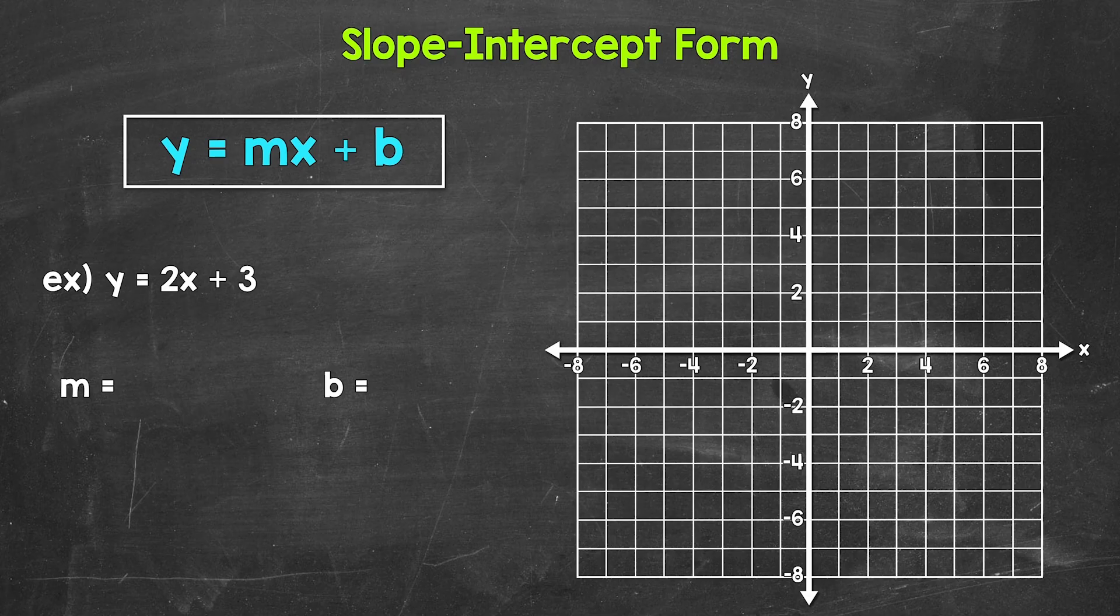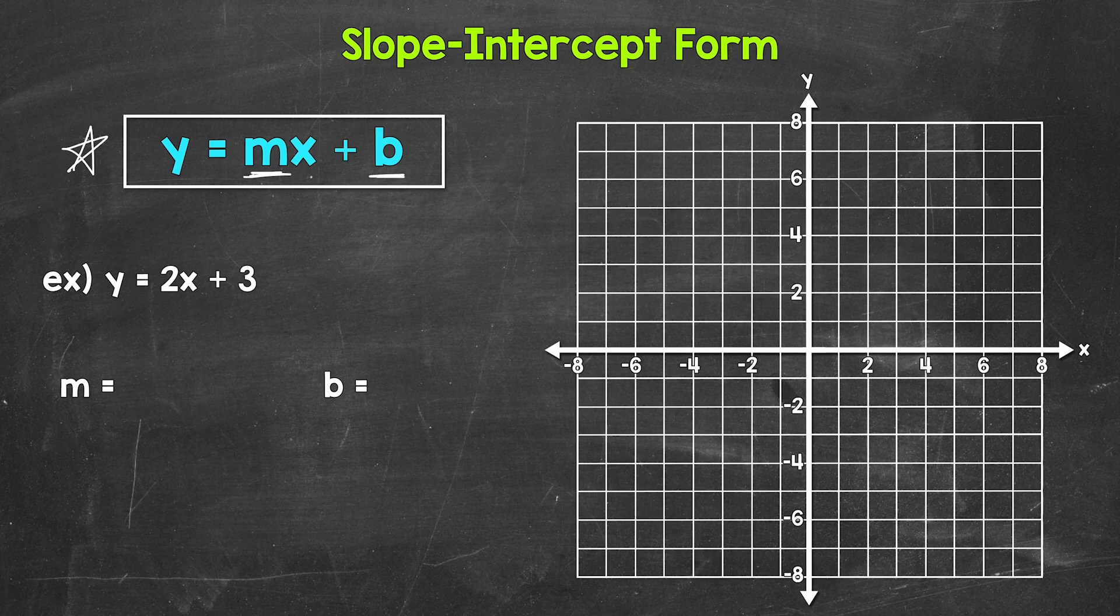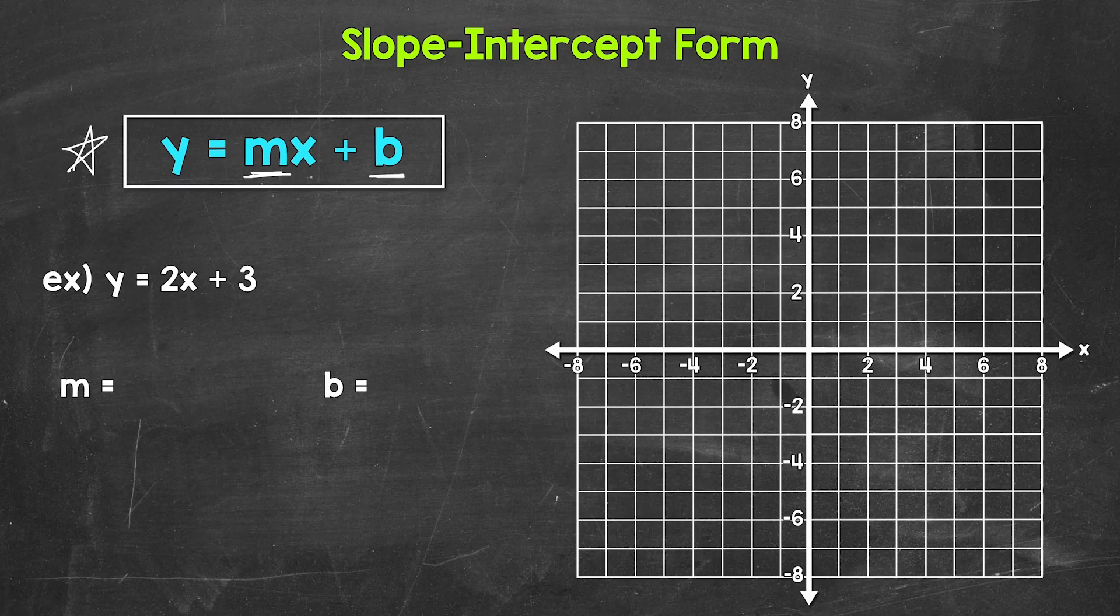We have slope-intercept form right here. y equals mx plus b, with m being the slope and b being the y-intercept. Remember, slope measures the steepness of a line, and the y-intercept is where the line crosses the y-axis. The slope and y-intercept give us all the information we need to graph a line.